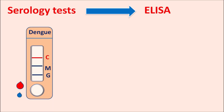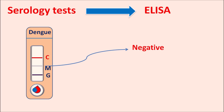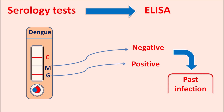Another possible result is IgM negative with IgG positive. This indicates the patient has IgG antibodies but not IgM antibodies, meaning there is no current infection but the patient has had a past infection. This past infection may be related to Zika virus, dengue virus, or Chikungunya virus, since all these belong to the flavivirus family. In this way, by using the serology test, we can confirm whether dengue viral infection is present or absent in the patient.